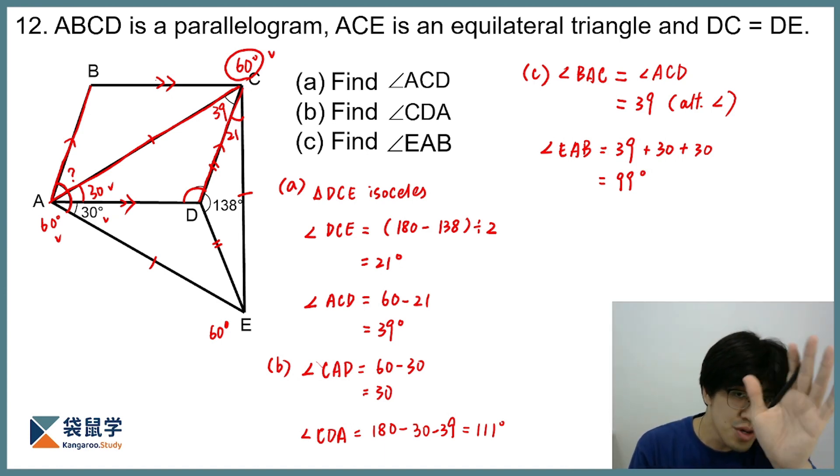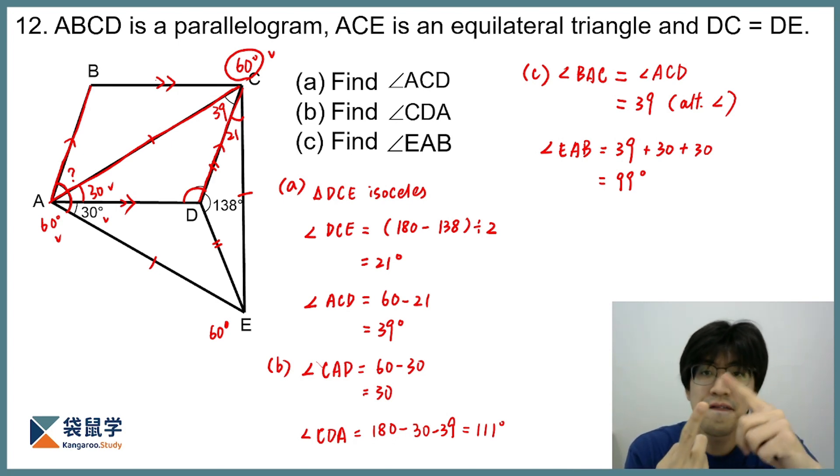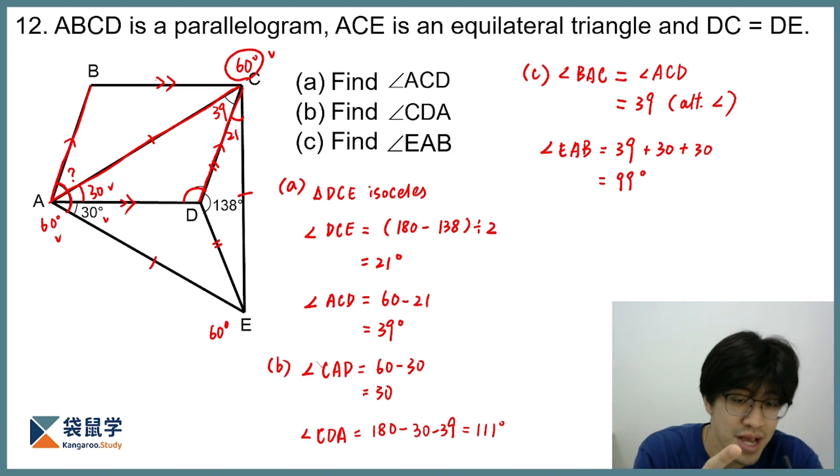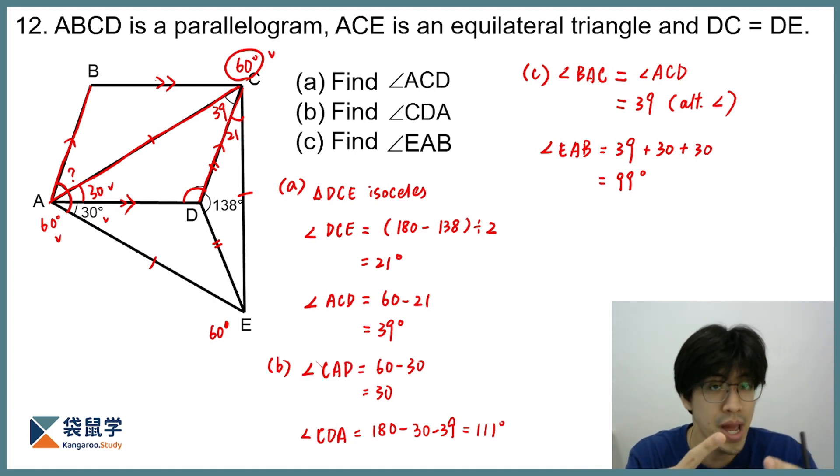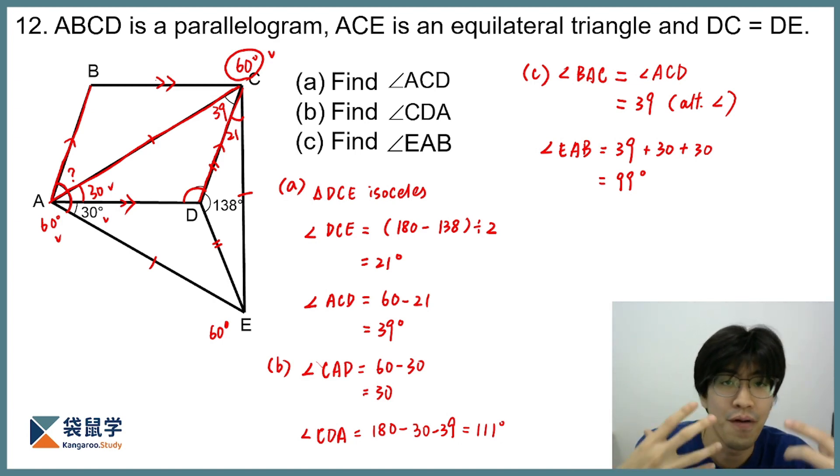So for geometry questions, don't go yet. It is very important that you follow these two methods. First, label the questions as you go. Label the sides as well as the angles that you know. And then second, look for a familiar shape. What do I mean with familiar shape? Like equilateral triangle, isosceles triangle, and parallelogram. Because those shapes tell us something about the angles.